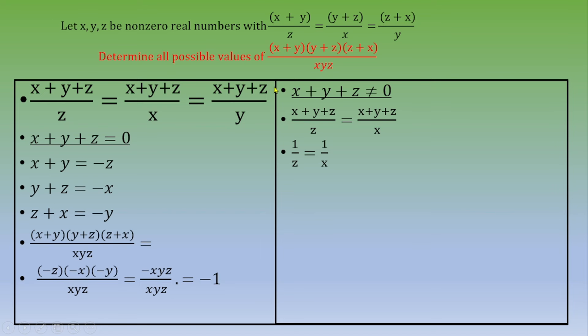Now consider the next two terms and apply the same process. Dividing by x+y+z, which we can do because it's nonzero, we end up with 1/x = 1/y.